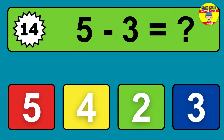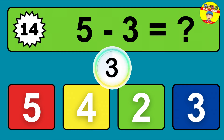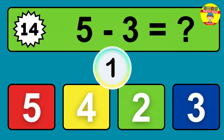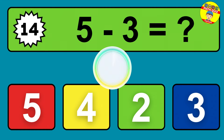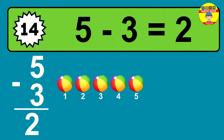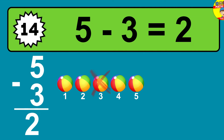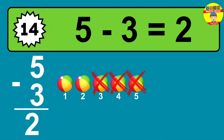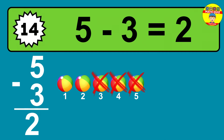Question fourteen: five minus three equals what? The answer is five minus three is two. Let's count it: one, two.